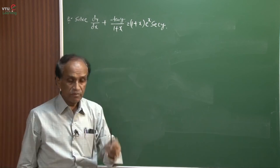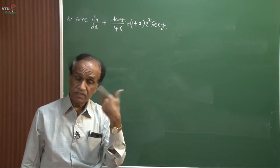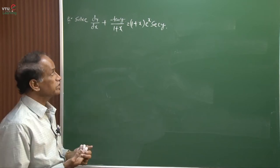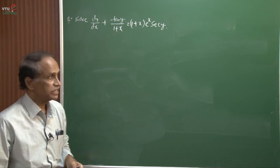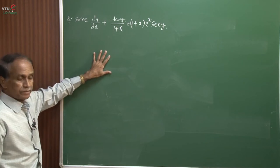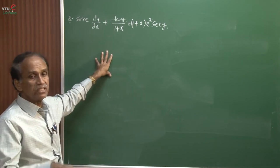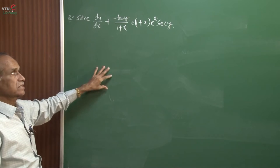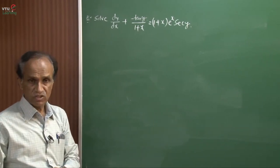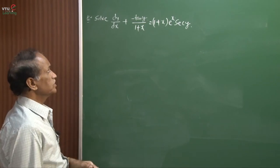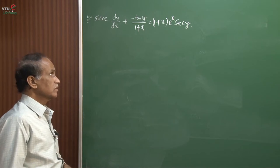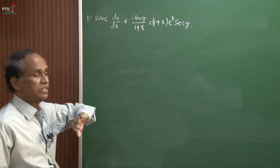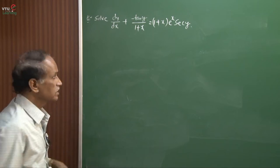This problem comes under Bernoulli's differential equation. First check: is separation of variables possible? No. Homogeneous? No. Reducible to homogeneous? No. Exact? No. Linear? No — because the right side is not free from y; both variables appear. So it must be Bernoulli's differential equation. The sec(y) on the right side corresponds to y^n in the standard form.